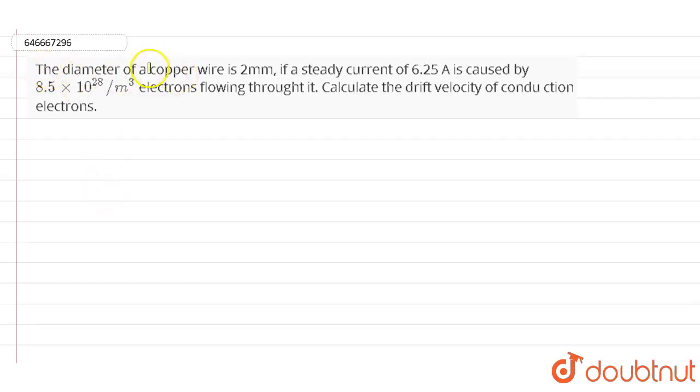It is given that the diameter of a copper wire is 2 mm. If a steady state current of 6.25 amps is caused by 8.5 × 10^28 per meter cubed electrons flowing through it, calculate the drift velocity of the conduction electrons.